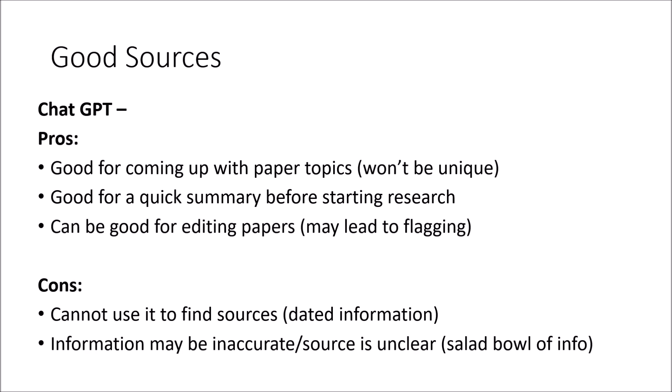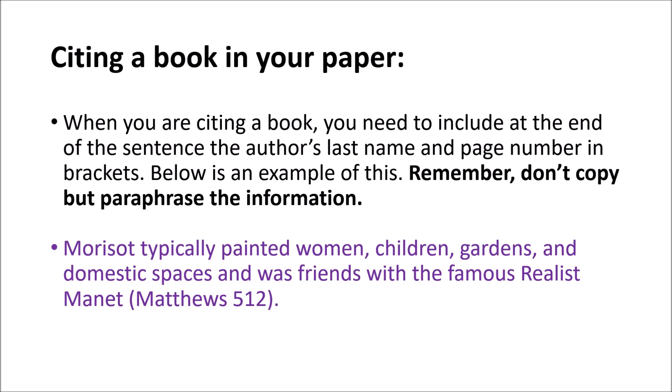Now let's talk about how to do in-text citations. I have an example of an in-text citation coming from a book — feel free to use a textbook as one of your sources, that's totally fine. Below I have a sentence that I have paraphrased, because whenever you're using stuff from an article or book, you need to put it in your own words. At the end of that sentence, you put in brackets the author's last name and the page number — no commas. It protects you from plagiarism and it helps you a tiny bit with word count, so it's a win-win.